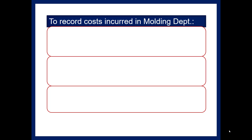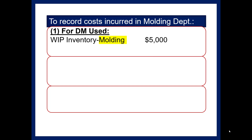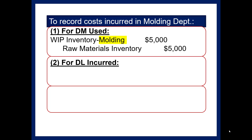To record the production costs incurred in the molding department for the direct material used, you'll debit Work in Process Inventory - Molding for $5,000, and credit Raw Material Inventory for $5,000. The only thing different from job order costing is that every production department will have its own Work in Process account.